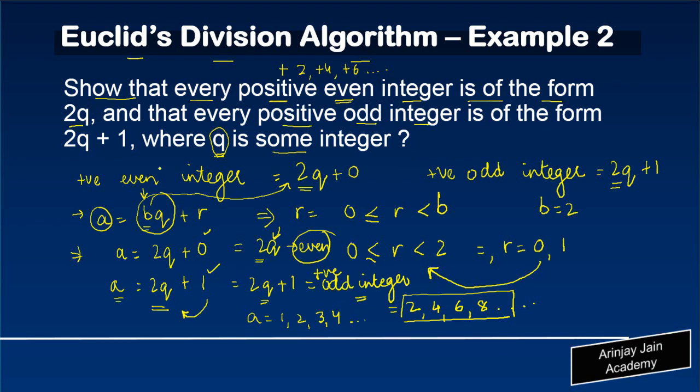And hence, we have kind of proved that 2q, every positive even integer, is of the form 2q, where q is some integer, and odd integer is 2q plus 1.